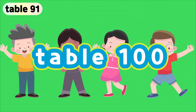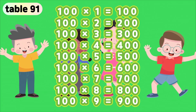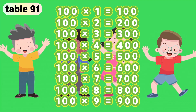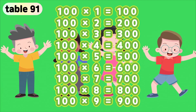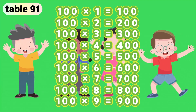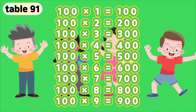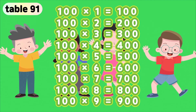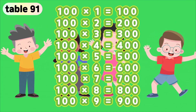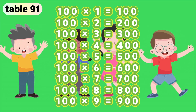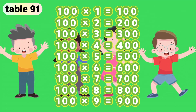Table 100. 100 times 1 is 100. 100 times 2 is 200. 100 times 3 is 300. 100 times 4 is 400. 100 times 5 is 500. 100 times 6 is 600. 100 times 7 is 700. 100 times 8 is 800. 100 times 9 is 900.